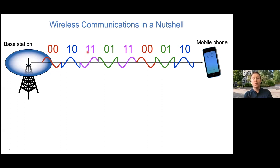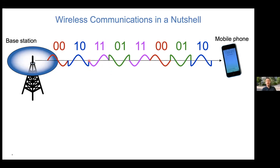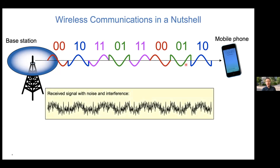1,0 has another shape. 1,1 has a third shape. 0,1 has a fourth shape. And next time I send 1,1, I use the same shape again. So this is essentially how wireless communication works: taking a sequence of 0s and 1s describing some kind of information, you cut it up into small pieces, you transmit them one at a time, mapped onto some kind of radio wave that goes over there.